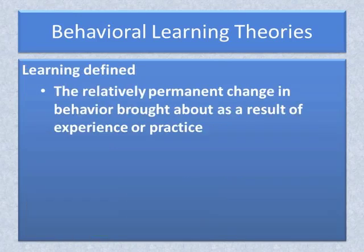In behavioral learning theories, learning is defined as a relatively permanent change in behavior, brought about as a result of experience or practice. More cognitively oriented theories would define learning as a relatively permanent change in behavior or behavior potential, or perhaps behavior in mental processes as a result of experience and practice.